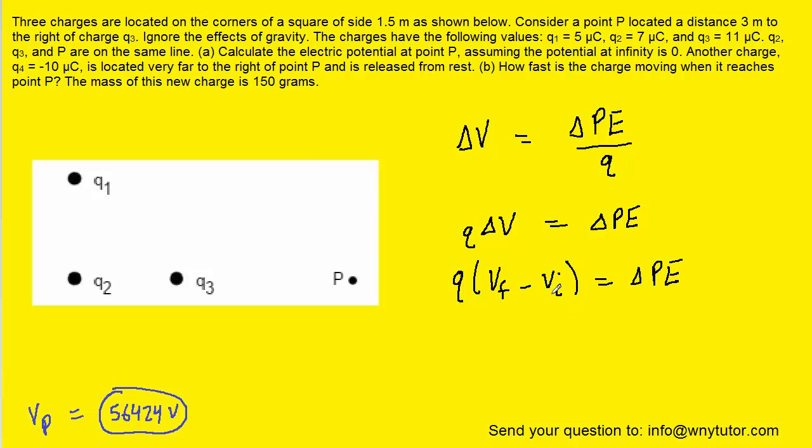We can then expand delta V and write it as V final minus V initial. Now, we recall that initially the charge was located very far away from point P, and that the question noted that we could assume the potential at a very far away location, or infinity, was zero. In other words, the V initial for this charge will be zero volts. The V final is going to be the potential at point P, which we just determined to be this value over here. So we can plug that in for V final.